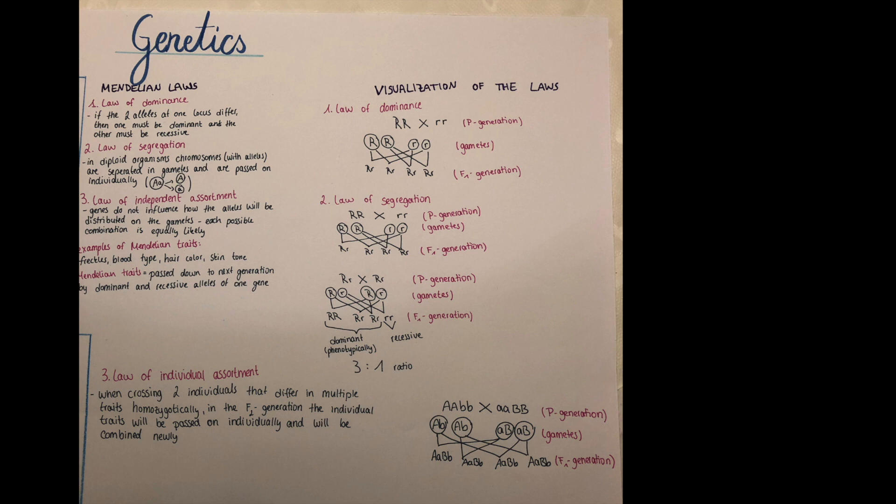And now the third law is when we're crossing two individuals that differ in multiple traits homozygotically. Then in the F2 generation, these individual traits will be passed on individually. So they will be combined newly. So to stay with the example of the hair color. Now we put in a second trait which might be straight hair or curly hair.